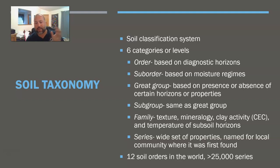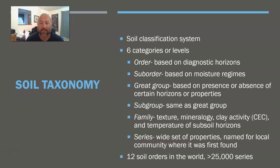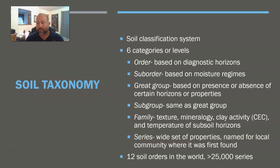When we start at the highest level with order, we get down to just 12 — there are 12 soil orders in the whole world. When we're at the series level, there are over 25,000 series in the world. So we go from very few categories, just 12, to quite a wide array, because soils can be so different in all the different places that you go.